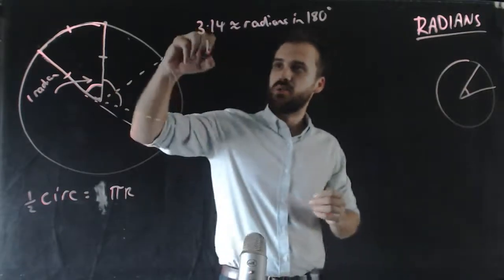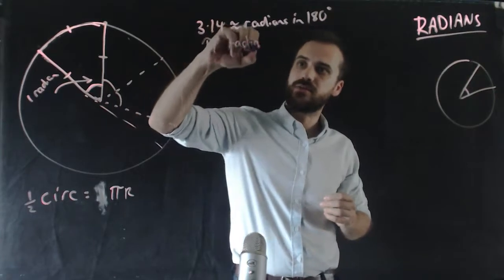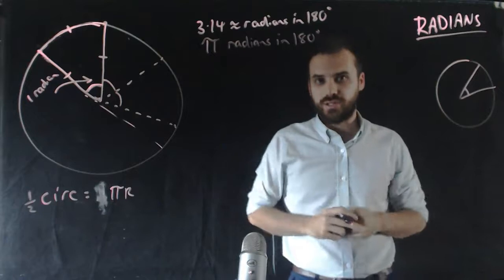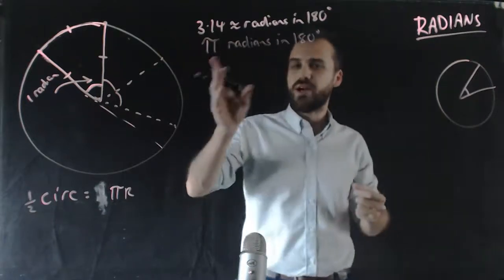If we want to be exact about it, we can say that there are pi radians in 180 degrees. From that, we can do a whole bunch of stuff. Pi radians in 180.